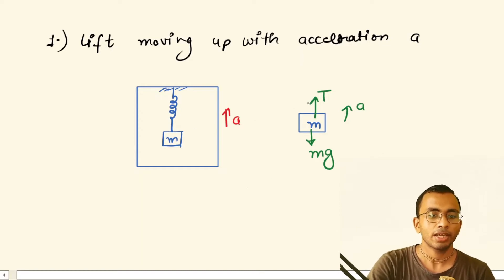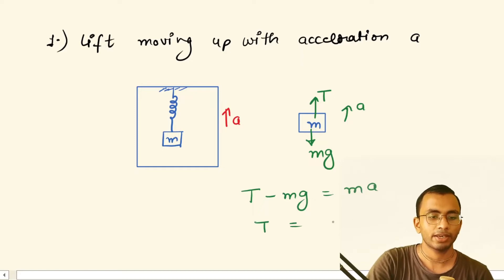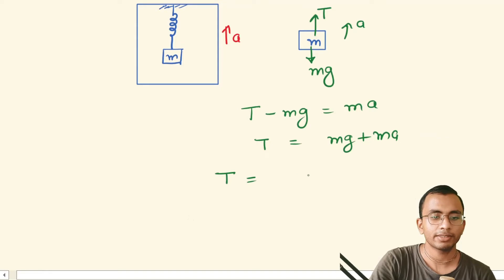The weight that we measure will be the value of T, because the spring measures T. We can write the equation: T minus mg equals ma, since the block is moving upward. From here, T equals mg plus ma, which gives us T equals m(g + a).